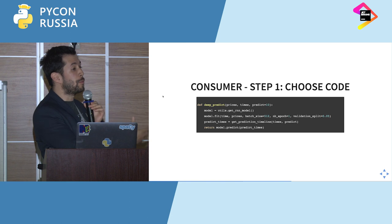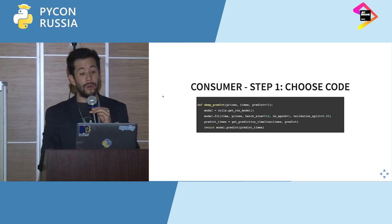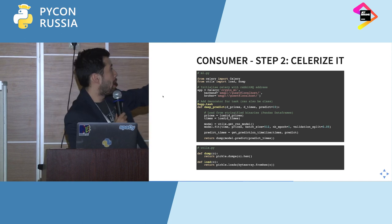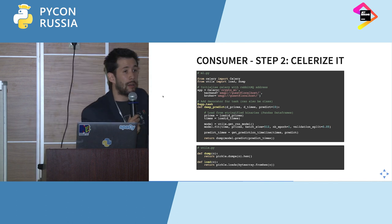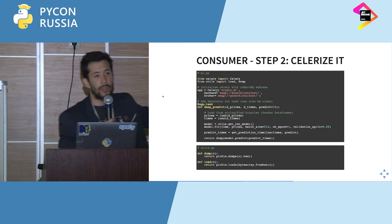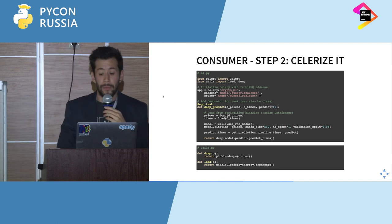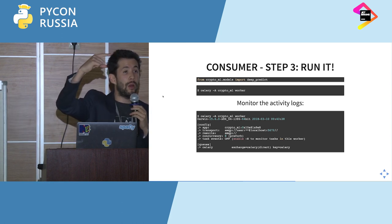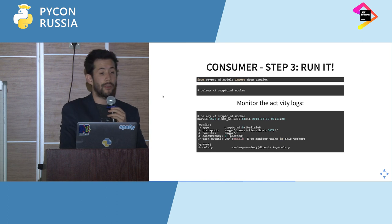To create our consumer — the one that listens for task requests — we take the code we want to run for prediction, and 'Celery-ize' it. We connect Celery to the RabbitMQ backend, then use a decorator to say this task is distributed. We make sure all inputs to the function and the return value are serializable, using pickle dump to serialize. In this case we're just getting the prices and running the exact same function and returning it. Then you run it — you can run this on multiple different servers connected to the queue, listening for any jobs to execute.